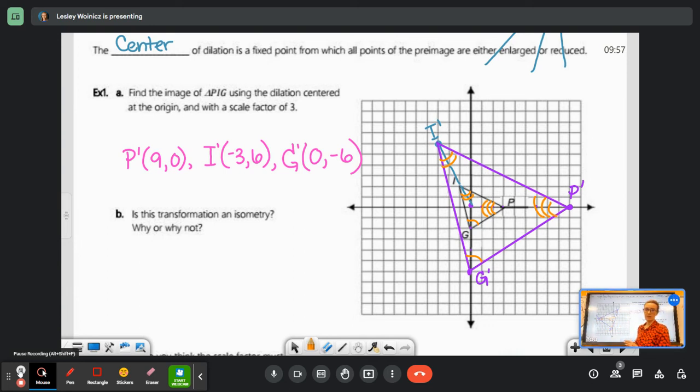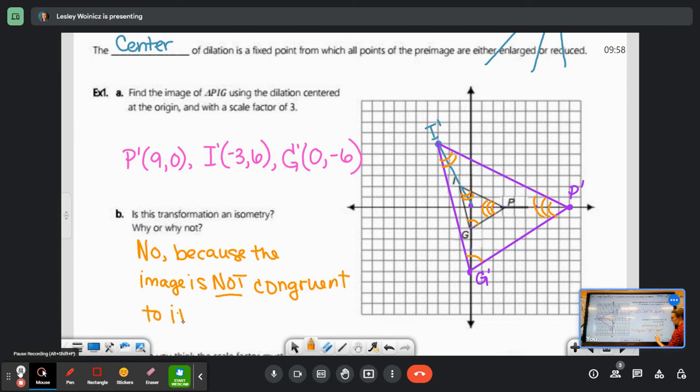But look at those side lengths. Those side lengths are very different. So what we have here is a similar figure, set of similar figures, not congruent figures. So this is not an isometry. No because the image is not congruent to its pre-image. These are only similar triangles.